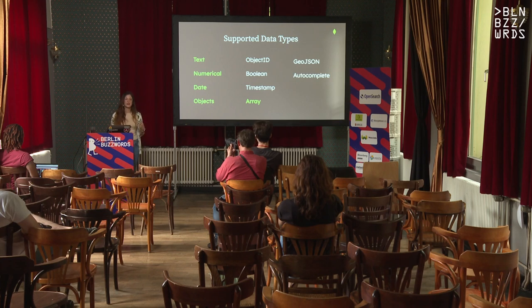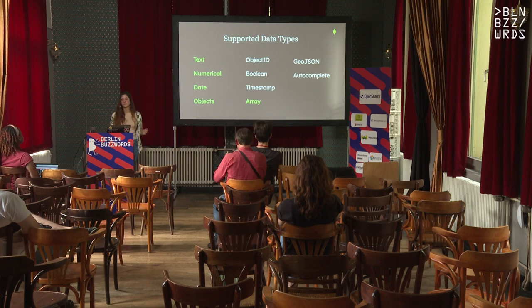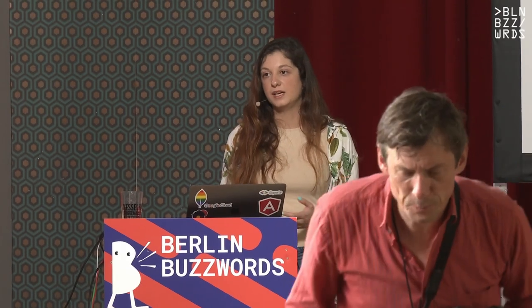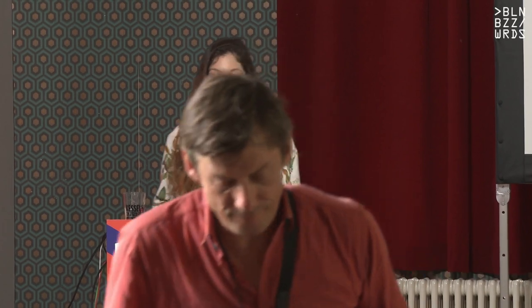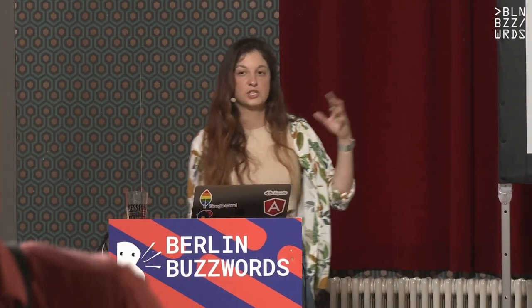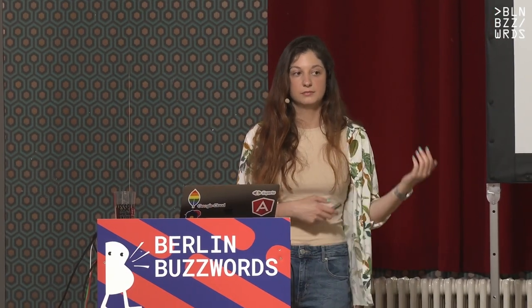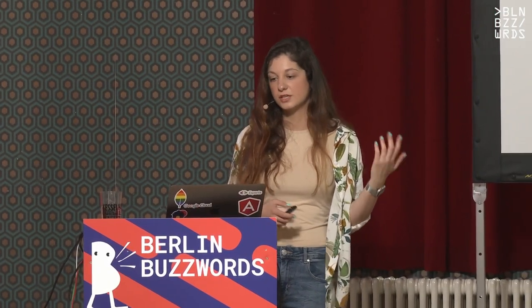All of these data types are supported. In addition to them, there is also support for facets. Facets are a clever way to put data into different buckets based on some categories. A category might be the position of the player, their club, or their country.